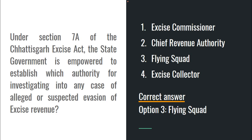Next: Under Section 7 of the act, the state government has the power to establish an authority for the purpose of investigating excise revenue evasion. The question asks which agency the state government can empower for this — and the answer is the flying squad. So option 3 is correct.